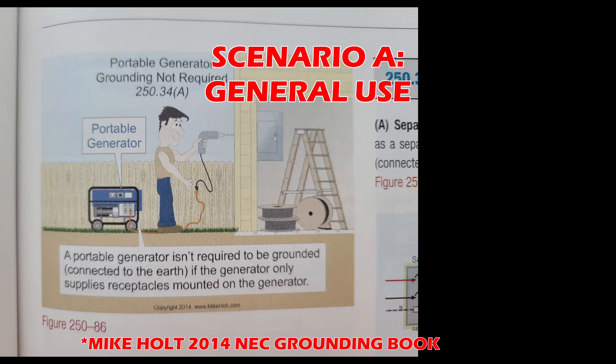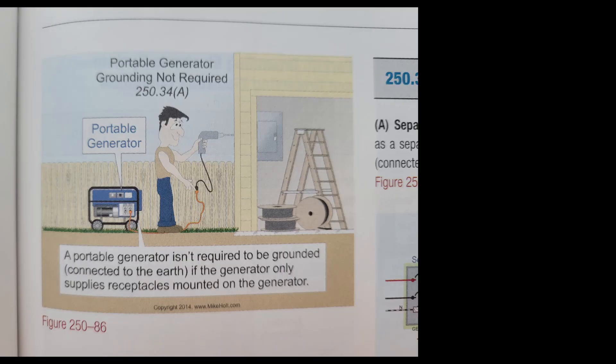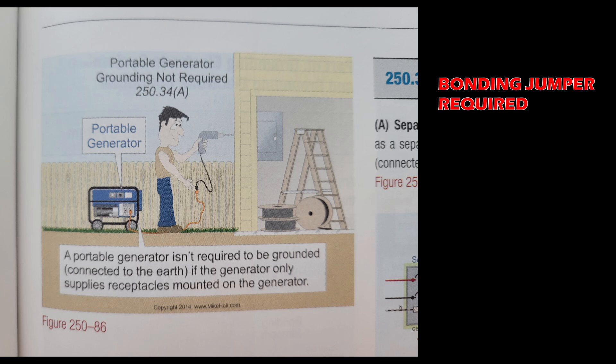In this scenario, you are using your generator at a construction site or similar, where you have appliances or tools plugged in directly to the 20 amp GFCI receptacles. In this case, the neutral to ground bonding jumper is required to stay in place and you do not need to install a ground rod.